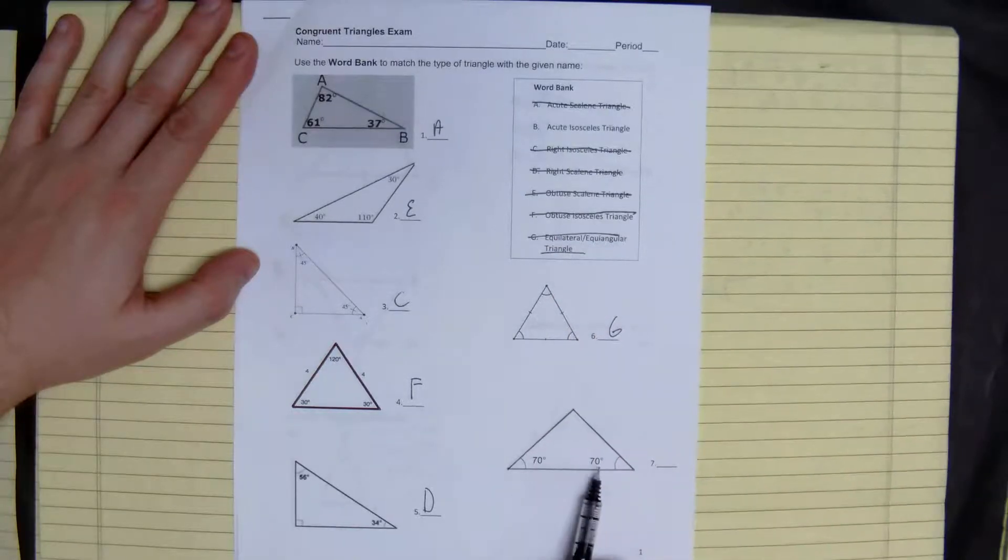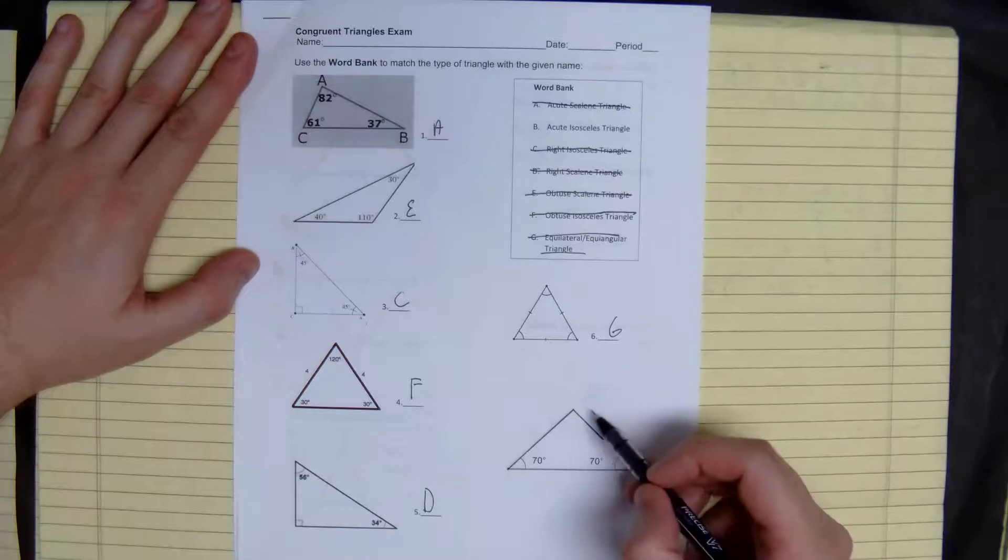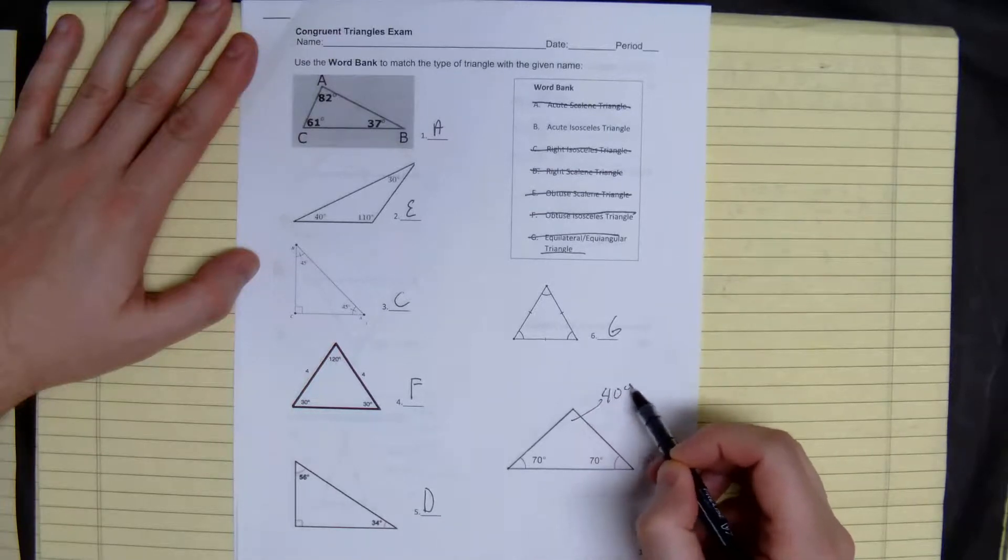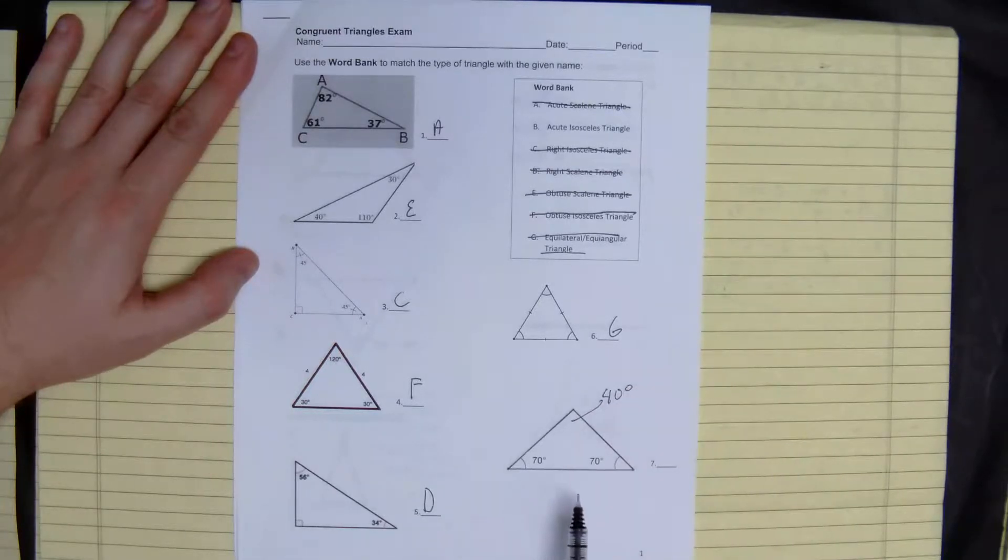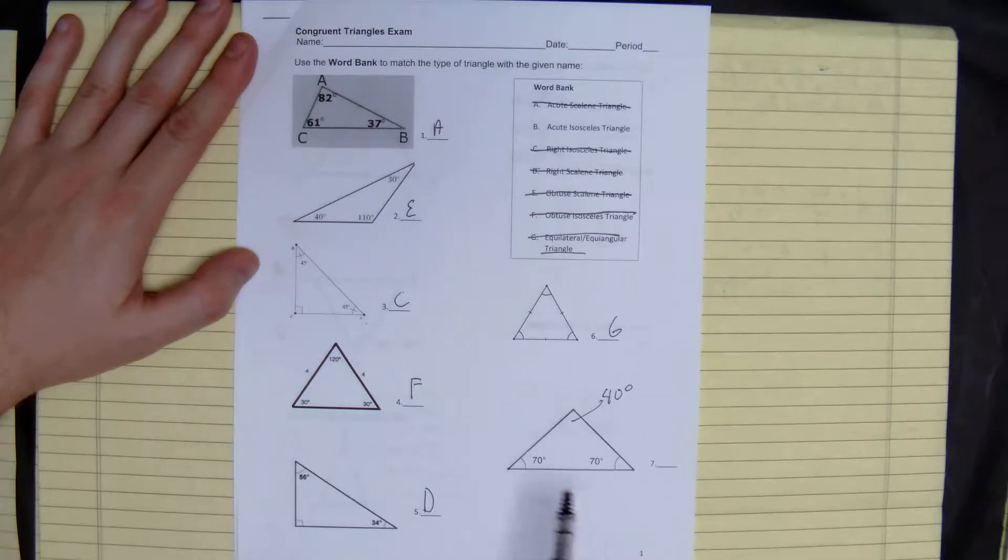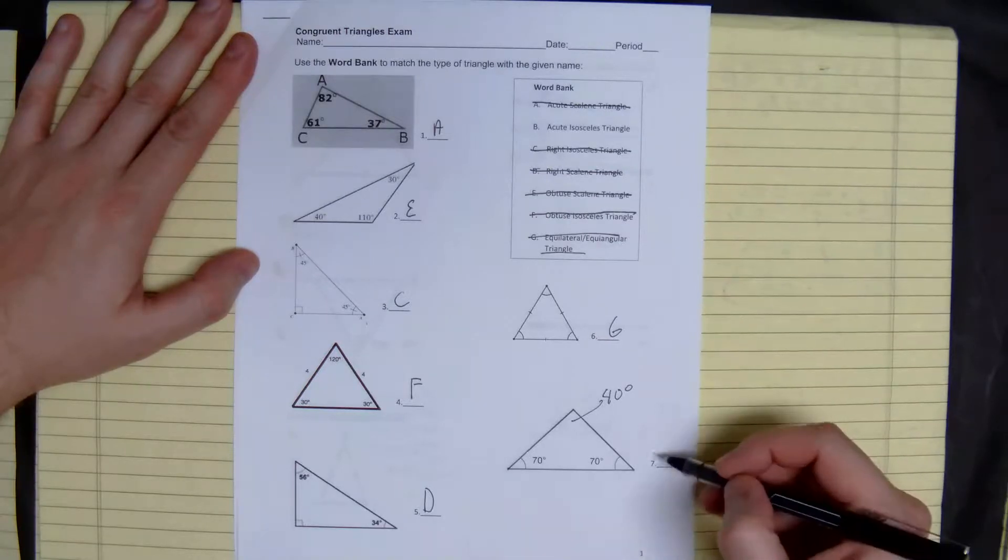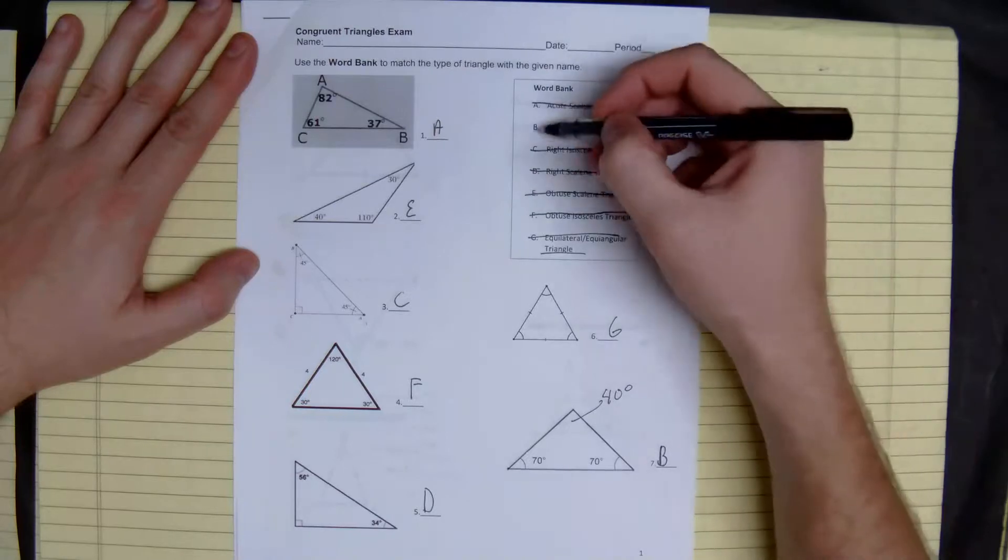Right here, we have 70 degrees, 70 degrees, that's 140. So this last one has to be 40 degrees. So all of them are less than 90. And we have two of the same, so the last one is going to be an acute isosceles triangle.